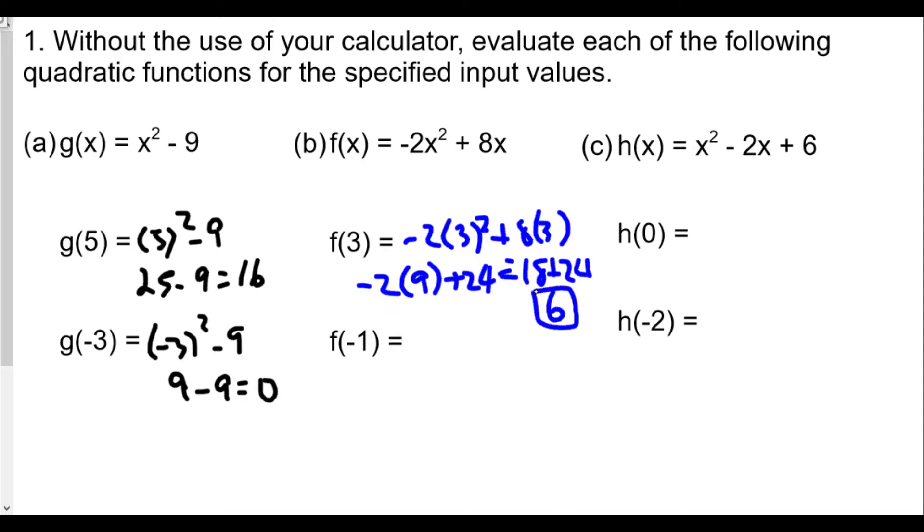For f of negative one, we have negative two times negative one squared plus eight times negative one. We have negative two times one, and negative one times eight is negative eight. So negative two minus eight equals negative 10. Be really careful about the signs. In this case, keep in mind you're squaring a negative number. When you square the whole thing, you're going to get a positive result. Be very careful with that. A lot of times when people type in a calculator, they forget to put the negative number in parentheses when squaring, and that does matter.